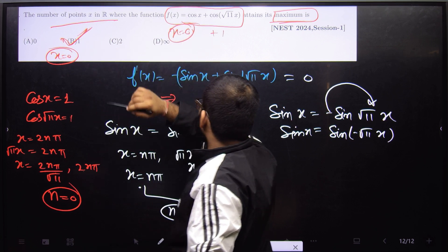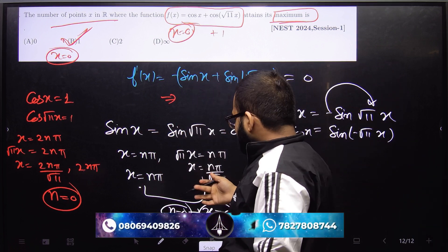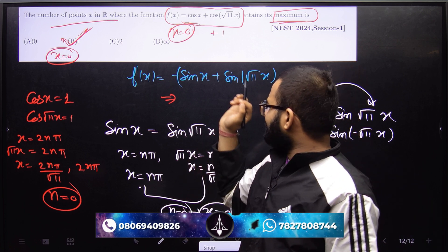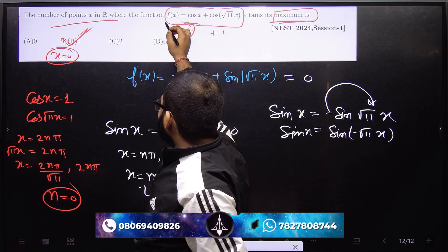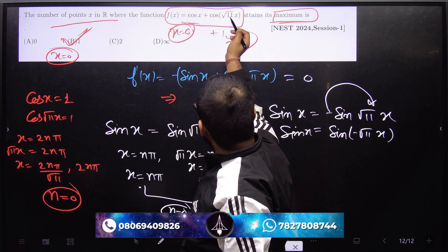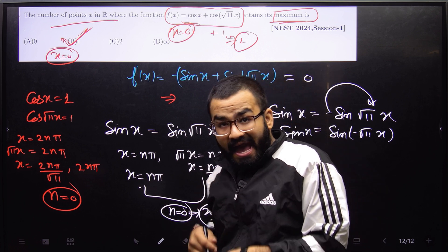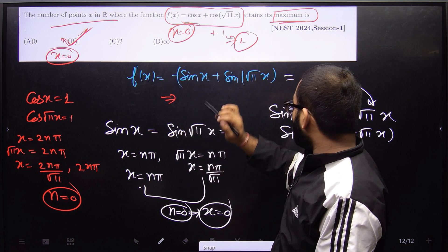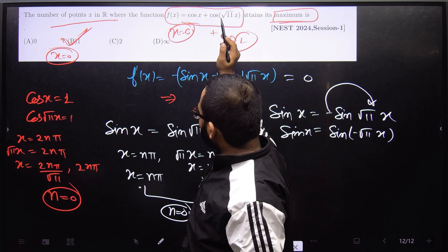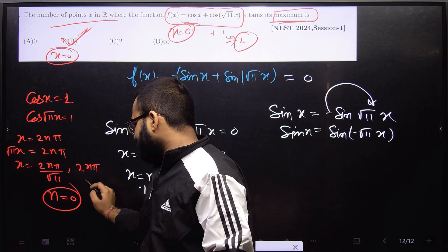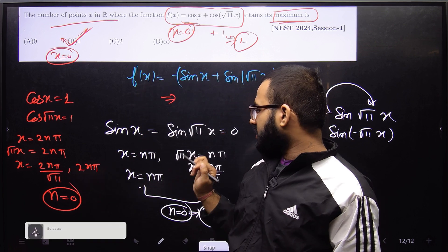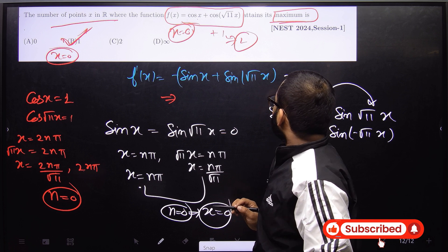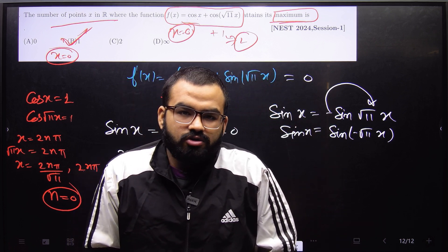This is a very nice question. Some students solve f'(x) fully, but that is a time-wasting method. Simply observe that putting x = 0 gives value 2, which is the maximum. Is there any other point other than 0? No, because the LCM of a rational and irrational number does not exist — the intersection gives only n = 0. So option B is the correct answer. Thank you very much.